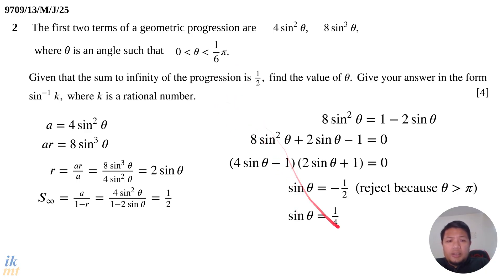Since sin θ is 1/4, and 1/4 is less than 1/2, and sin(π/6) = 1/2, that means this angle θ must be less than π/6.